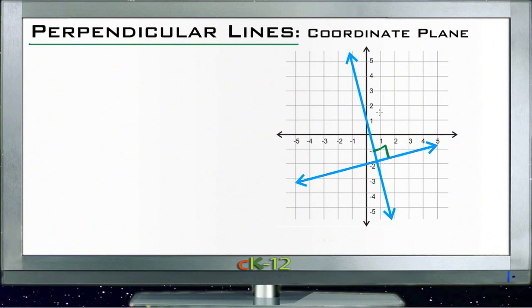The key to understanding perpendicular lines in the coordinate plane is to note their slopes. If we take a look at the slope of line A here, we pick a point, say down here at negative four, negative three, and then pick another point where the line crosses, say here, zero, negative two.